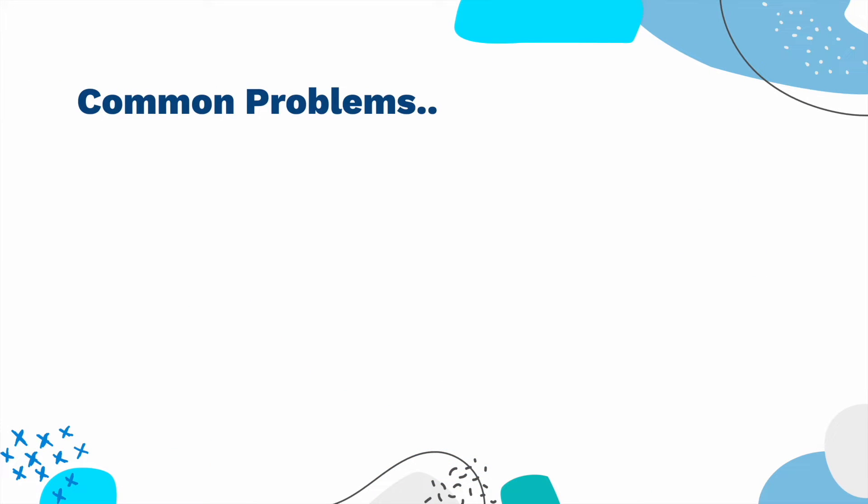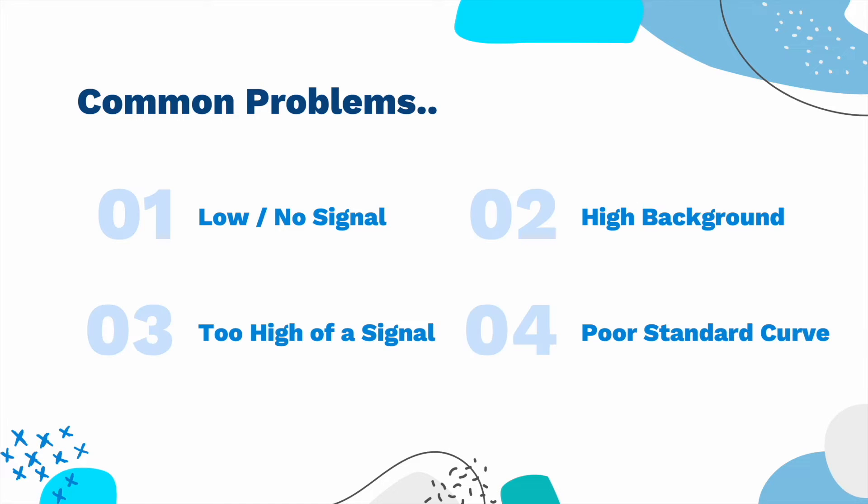Some common problems that you may potentially come across with your ELISA include having a low signal or no signal at all, a high background, too high of a signal, and a poor standard curve.